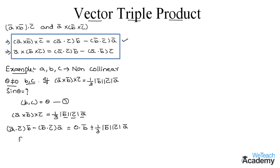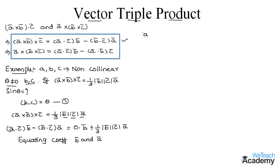Equating the coefficients of b̅ and a̅, we get: a̅ · c̅ = 0, which means a̅ is perpendicular to c̅. And b̅ · c̅ = −(1/3)|b̅||c̅|.